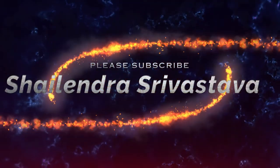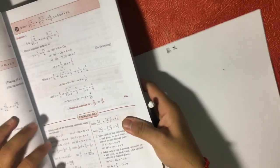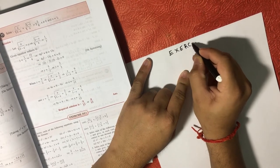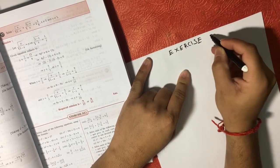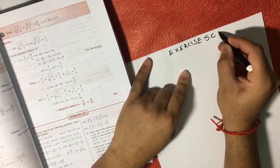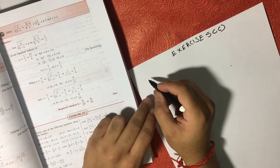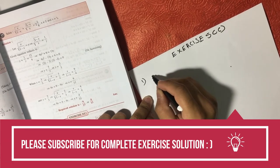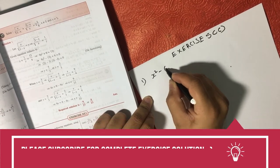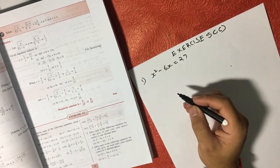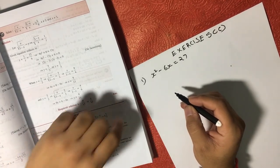So the first equation is saying, let me write the exercise. Exercise is 5C, and question number 1 is x square minus 6x is equal to 27. So this is the equation which we need to solve.